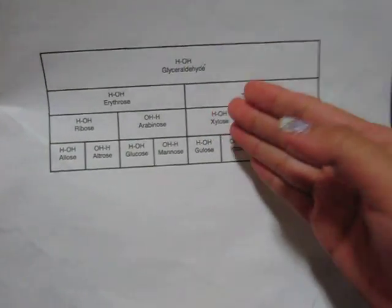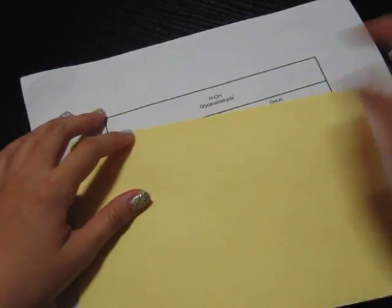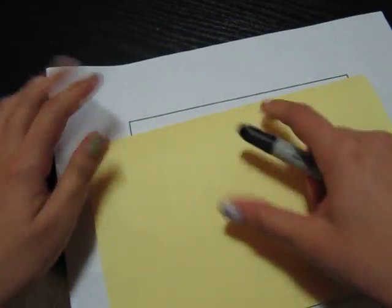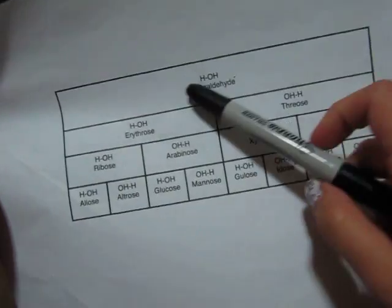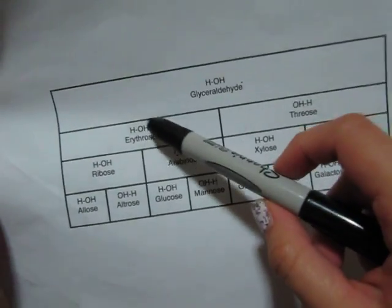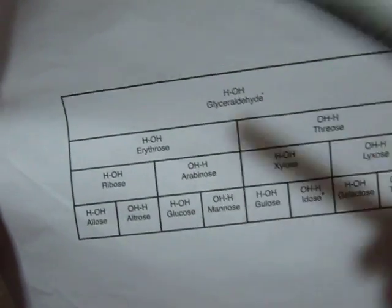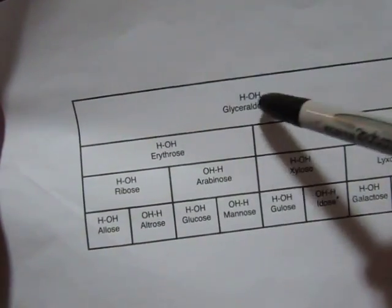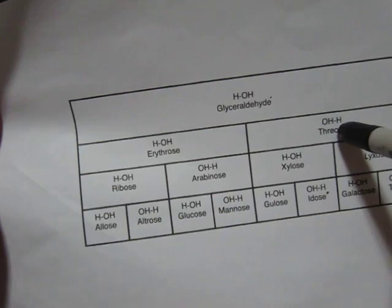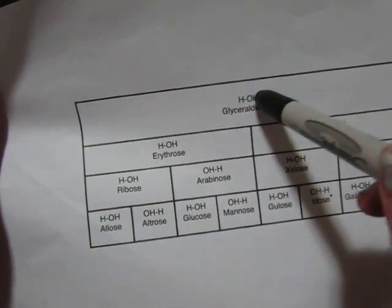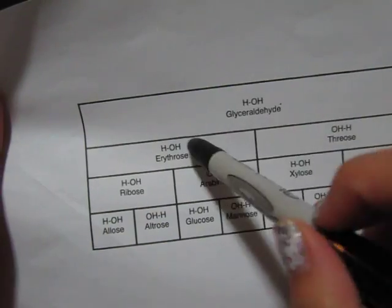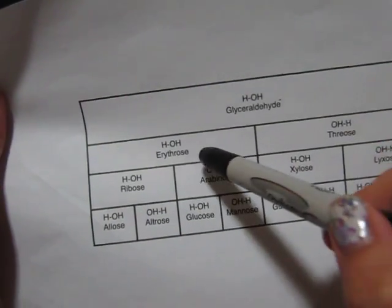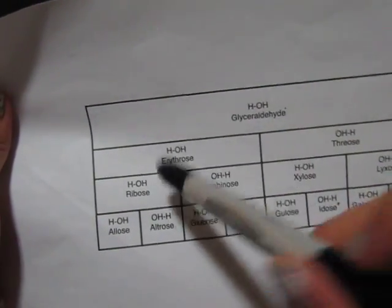All you have to remember is HOH is at the top, which is glyceraldehyde, and that HOH is the same thing on each row — you start with that on each row. There are three rows here, so HOH, and then it flips into OHH. So glyceraldehyde splits into two, giving two columns on the next row.